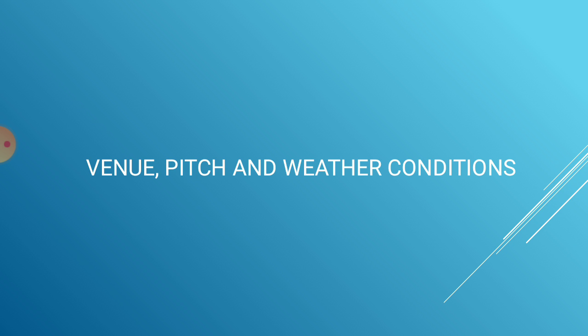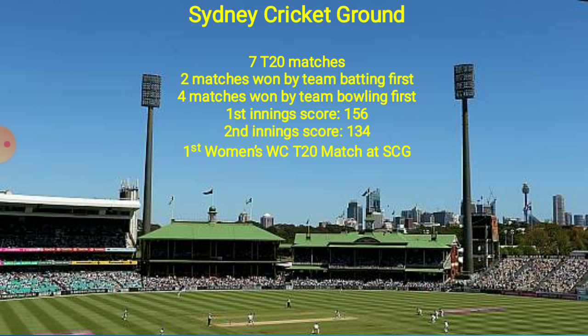Moving on to the venue, pitch and weather conditions — this will be the first Women's World Cup T20 match at the Sydney Cricket Ground. Overall, the SCG has previously hosted two women's T20 matches, both won by Australia: one in 2009 against New Zealand and one in 2016 against India. Of seven T20 matches held there, two were won by the team batting first and four by the team bowling first. The average first innings score stands at 156 and the second innings score at 134.